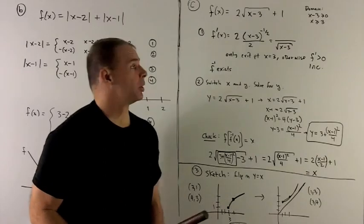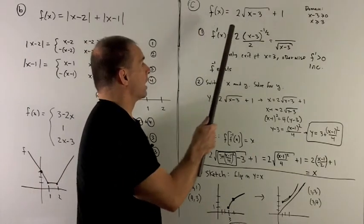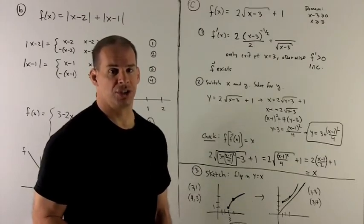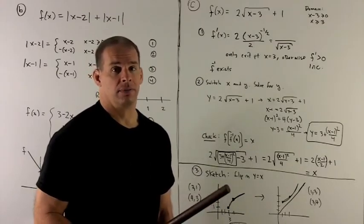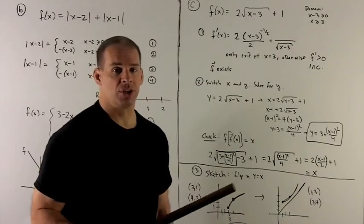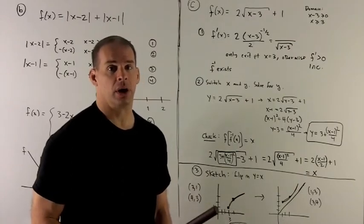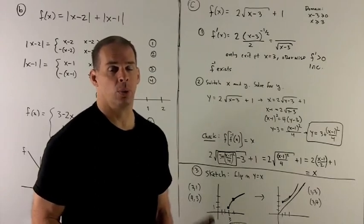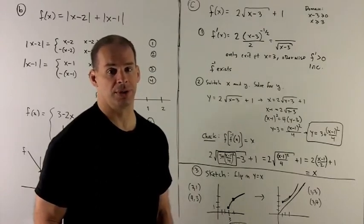For my last example, let's check f of x equal to 2 times the square root of (x minus 3) plus 1. First, let's check the domain. For the radical to make any sense, whatever's going in has to be greater than or equal to 0. So I need x minus 3 greater than or equal to 0, or x greater than or equal to 3.